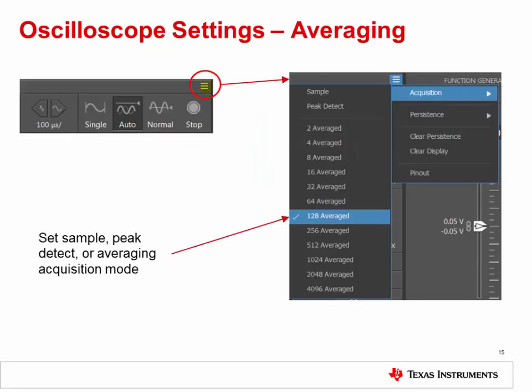The icon at the top right of the acquisition settings opens more acquisition options. The acquisition mode can be changed to sample, peak detect, or average. Set the acquisition to 128 times averaged. Persistence of display may also be used; in general, we recommend leaving persistence disabled throughout the TI Precision Labs.